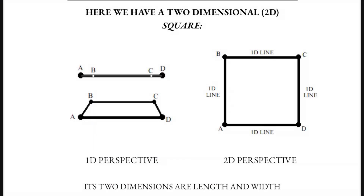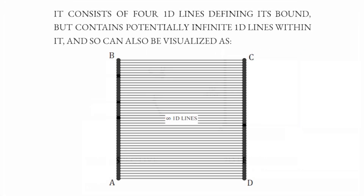Here we have a two dimensional square. Its two dimensions are length and width. It consists of four one dimensional lines defining its bound, but contains potentially infinite one dimensional lines within it, and so can also be visualised as such.